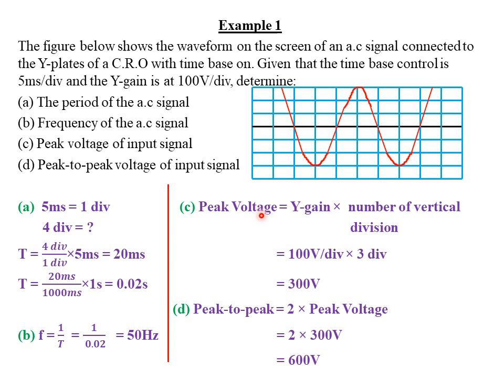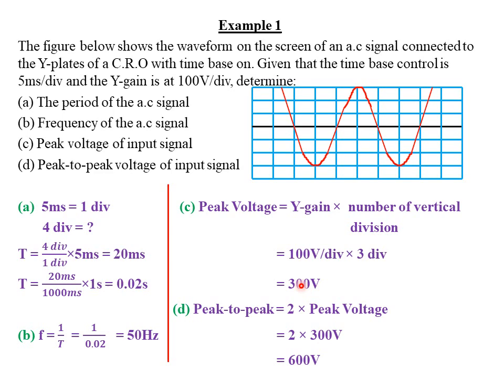For part D, we find the peak-to-peak voltage. Peak-to-peak simply means two times the peak voltage. From the crest to the trough, there are one, two, three, four, five, six vertical divisions, so six multiplied by 100 gives 600 volts. Alternatively, two times the peak voltage: 2 × 300 volts equals 600 volts.